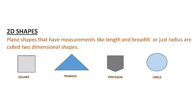What are 2D shapes? Two dimensional shapes. The plane figures having two measurements — for example, length and breadth, or just radius — are called two dimensional figures.